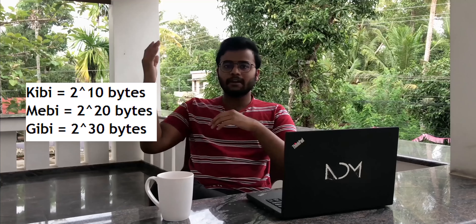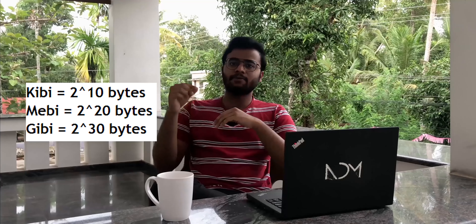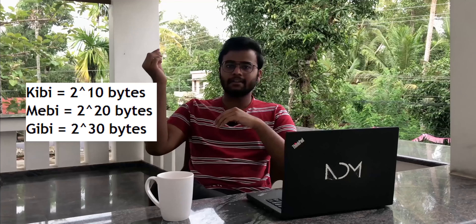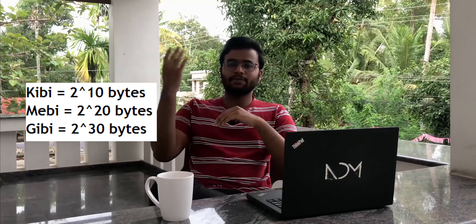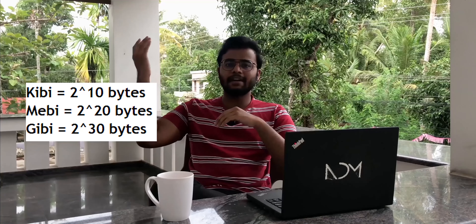Whereas in our computer system, we use the binary system — base 2. In this system, 1 Kibibyte is 2 to the power of 10, 1 Mebibyte is 2 to the power of 20, and 1 Gibibyte is 2 to the power of 30.